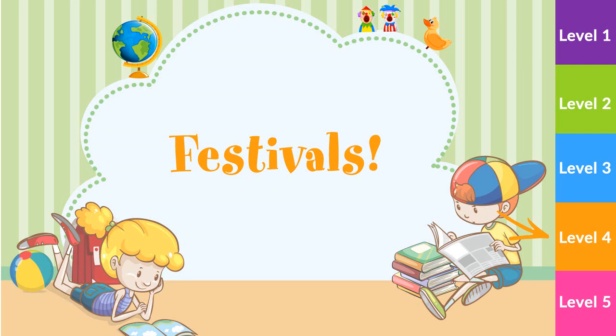A. How many Easter eggs does Paula have? B. How many Easter eggs does Frankie have? Listen for the correct answers. A. Paula has seven Easter eggs. B. Frankie has eight Easter eggs. C. Dennis has six Easter eggs.